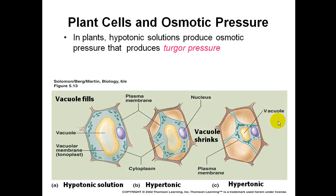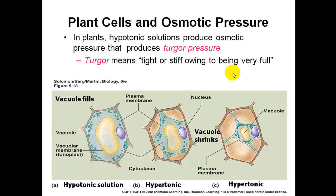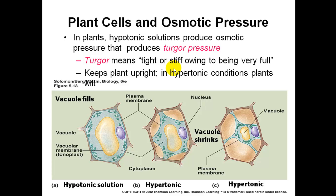Plant cells and osmotic pressure: in plants, hypotonic solutions produce osmotic pressure that creates turgor pressure — the vacuole gets very large, water pushes against the cell wall, and the plant stays tight and upright. In hypertonic conditions, the plant can shrivel and wilt as the vacuole shrinks. Turgor means tight or stiff owing to being very full. It keeps the plant upright. In hypertonic conditions, plants will wilt.